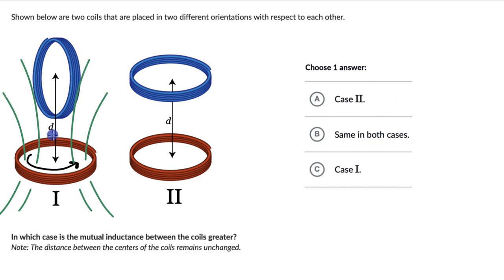Now these magnetic field lines might be passing through the other coil, and as a result of that, the magnetic flux through the other coil changes. We know from Faraday's law that whenever there is a changing magnetic flux, there will be an EMF induced. That EMF will be in opposition to the change in flux — that is what Lenz's law says. So as a result of the current flowing in one coil, we have an EMF induced in the other coil, which gives rise to mutual inductance.